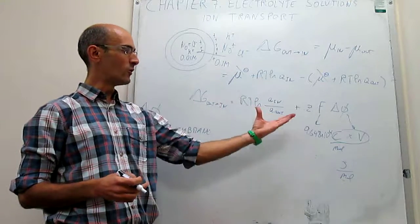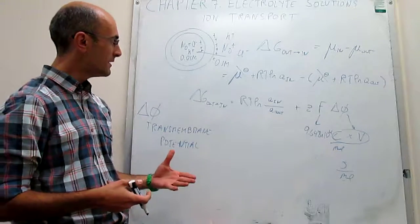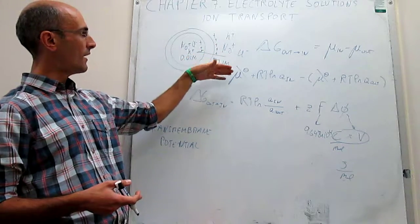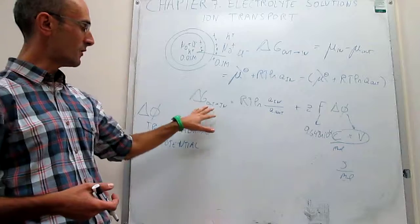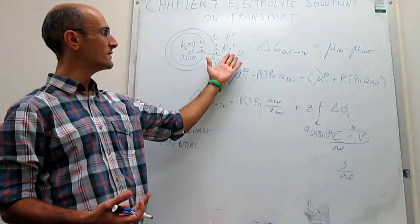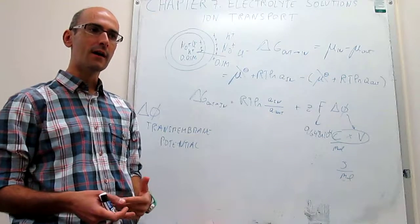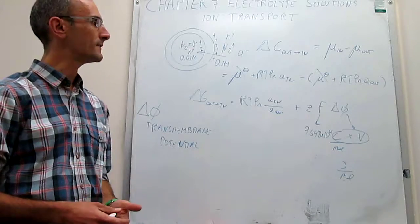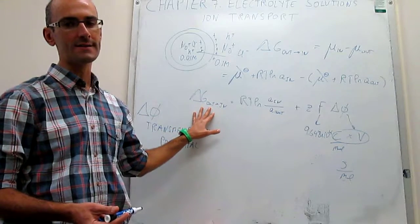In problems, there are two major scenarios that might emerge. In the first scenario — which is what we have right here — both the concentration term and the electrostatic term favor the transfer of the sodium ion from the outside into the inside. That means the total ΔG will be negative and the transfer is spontaneous. You can move the sodium ion from the outside into the inside without doing any work; the only thing you need is a mechanism for the internalization of that ion, such as a protein or a pore.